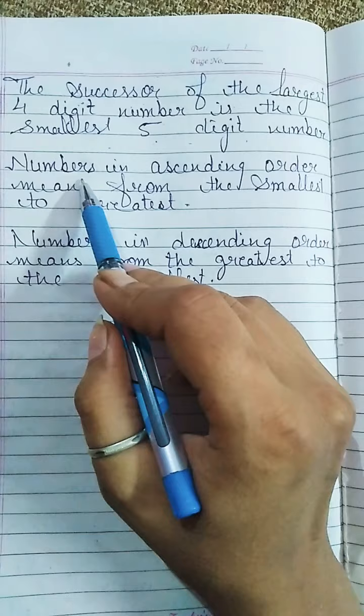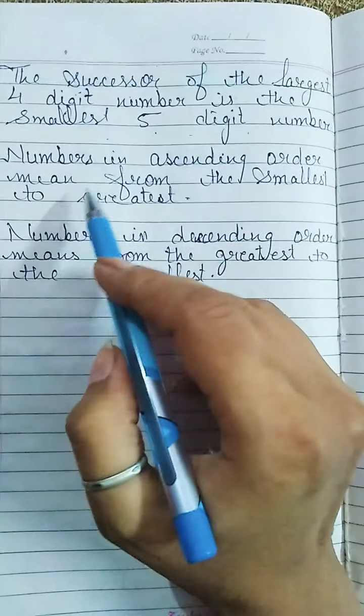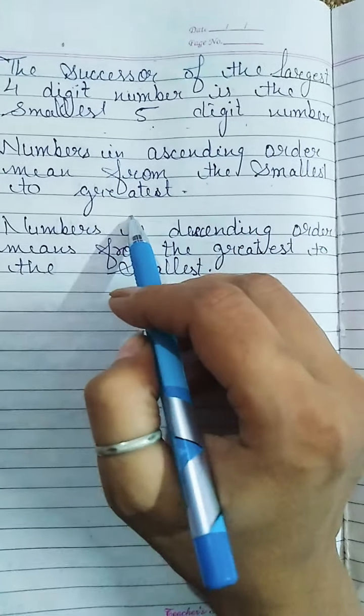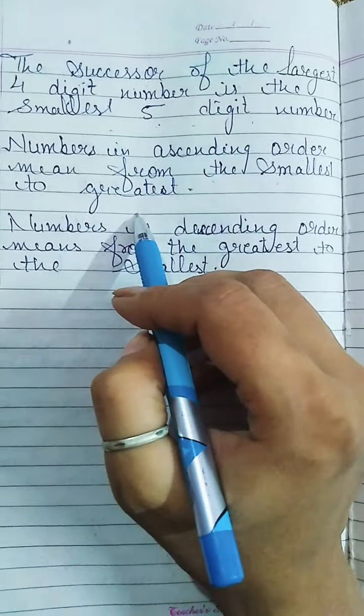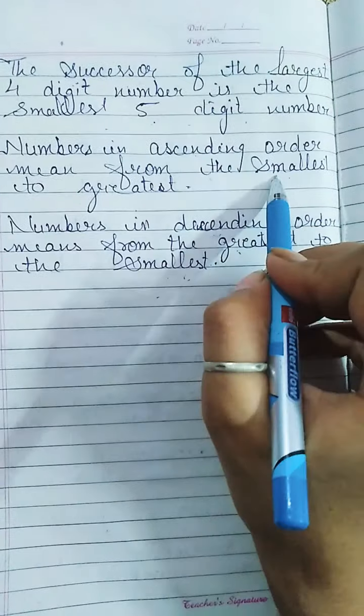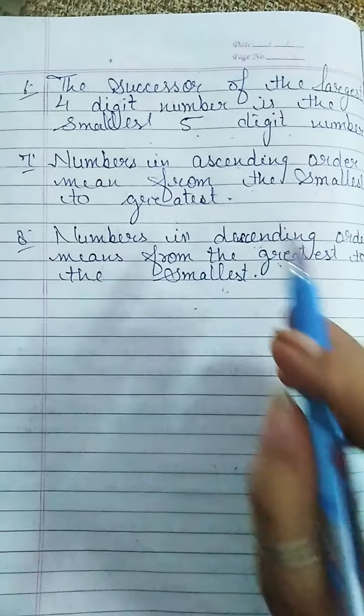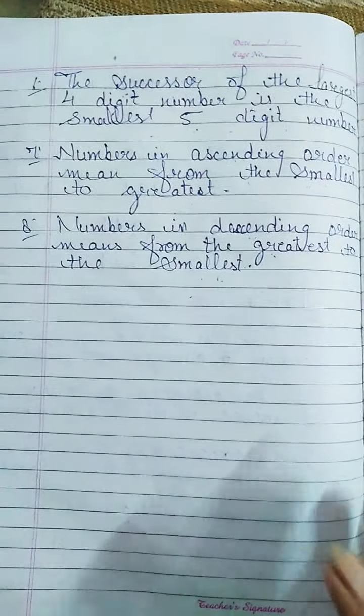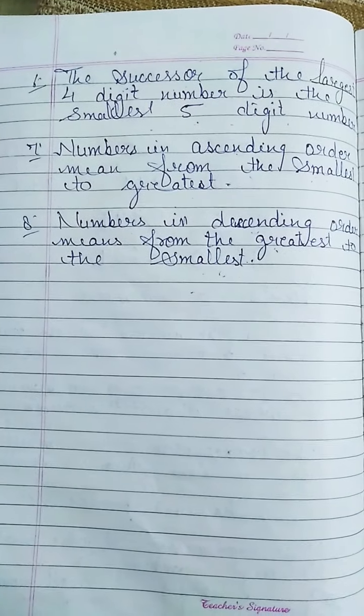Point 7: Numbers in ascending order means from the smallest to the greatest. Point 8: Numbers in descending order means from the greatest to the smallest — greatest, then smaller, then smaller. Ascending order is smallest to greatest. That's it — I think that's enough for today. Take care, stay home, stay safe. Thank you, bye-bye.